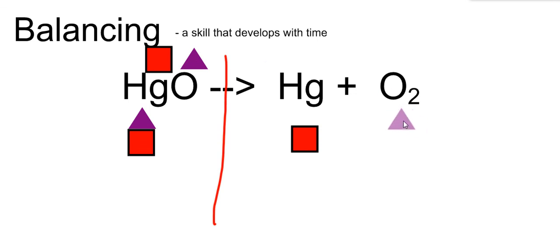On this side, I have one mercury, and then I have two triangles that are touching, because they are the same element. I have two of them.